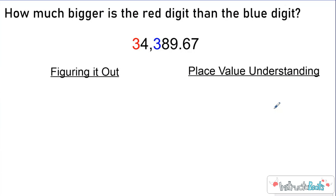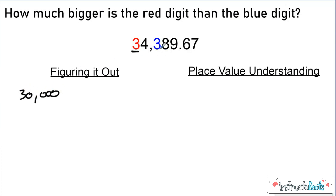This lesson is really all about a specific question you might see on a test: how many times bigger is the red digit than the blue digit? Figuring it out the long way — this is a pretty simple question. We know that the red three is in the ten-thousands place, which is the fourth position to the left of the ones place, so we know that it is worth 30,000. And we know that the blue three is worth 300.